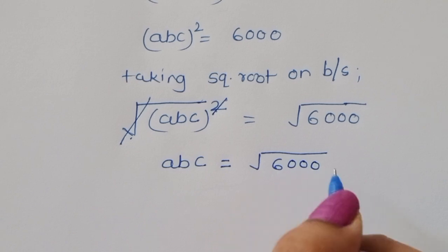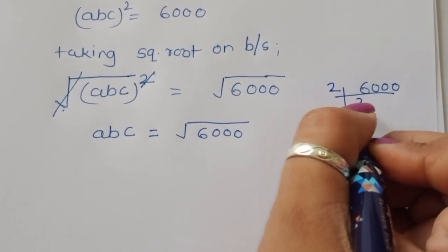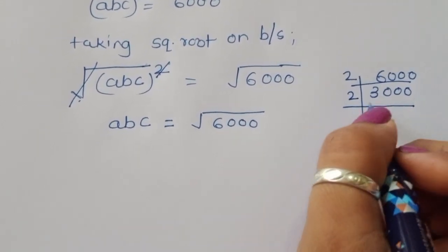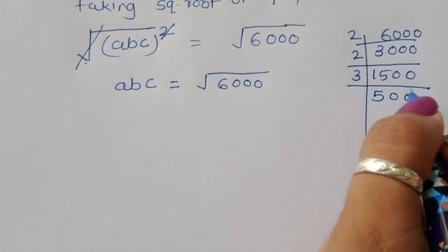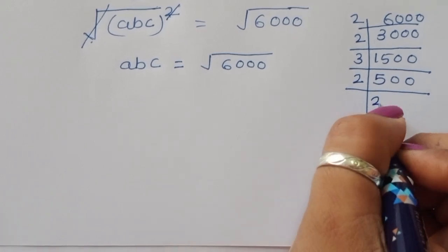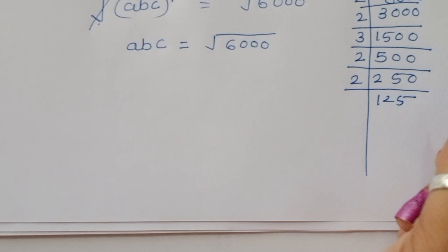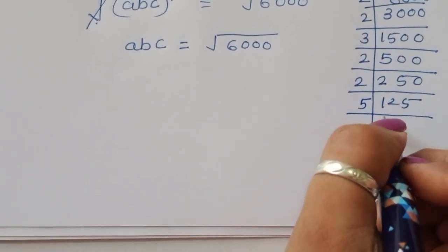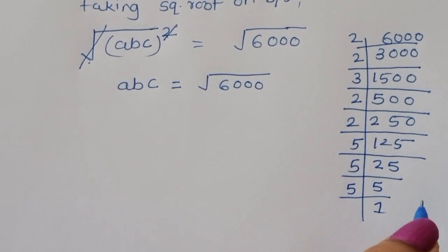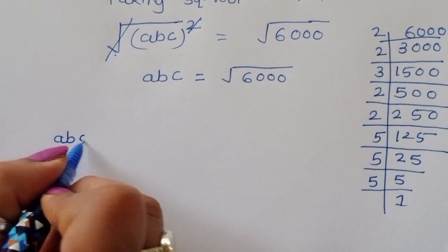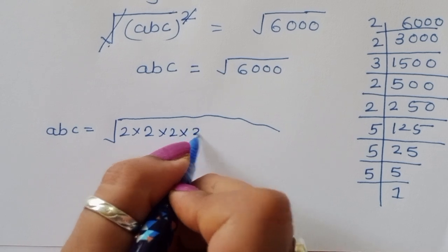Now we need to find the prime factorization of 6000. We divide: 6000 divided by 2 is 3000, by 2 is 1500, by 2 is 750, by 2 is 375, by 5 is 75, by 5 is 15, by 5 is 3. So 6000 equals 2 times 2 times 2 times 2 times 5 times 5 times 5 times 3.